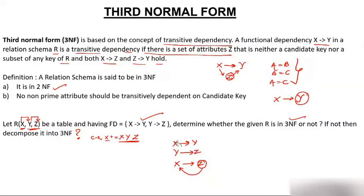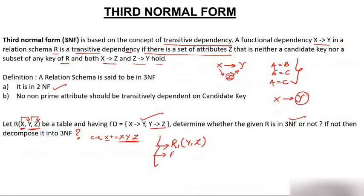We will decompose this table. The functional dependency causing the violation is Y→Z. So R1 contains Y and Z. R2 contains X and Y. You can also write this as decomposing into YZ and XY. In R2(X,Y), X is the candidate key. Checking both tables: neither R1(Y,Z) nor R2(X,Y) has a transitive dependency, so both tables are in 3NF.